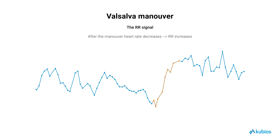Subsequently, heart rate decreases as a result of a rapid rise in blood pressure. This blood pressure elevation activates baroreceptors, triggering parasympathetic cardiac activity. The increase in blood pressure is attributed to the return of blood to the heart as intrathoracic pressure normalizes, and also partly to residual sympathetic activity causing peripheral vasoconstriction.